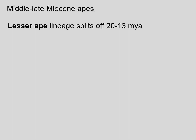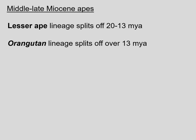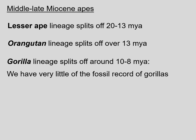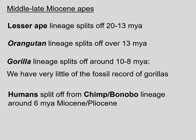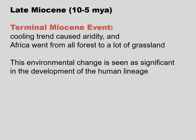When did all of these lineages split apart? Looking from the middle to the late Miocene, the lesser ape lineage split off sometime between 20 and 13 million years ago. Then, among the great apes, the orangutan lineage splits off over 13 million years ago. We have very little of the fossil record of gorillas, but they appear to have split off around 10 to 8 million years ago. And finally, it appears that humans and the chimpanzee-bonobo lineages split around 6 million years ago, around the Miocene-Pliocene boundary.